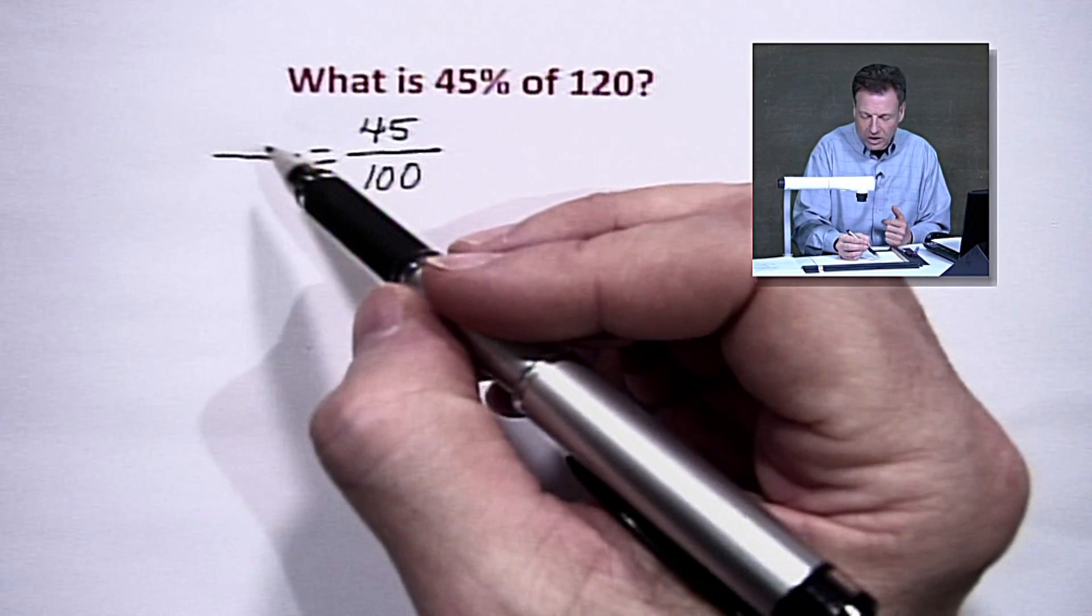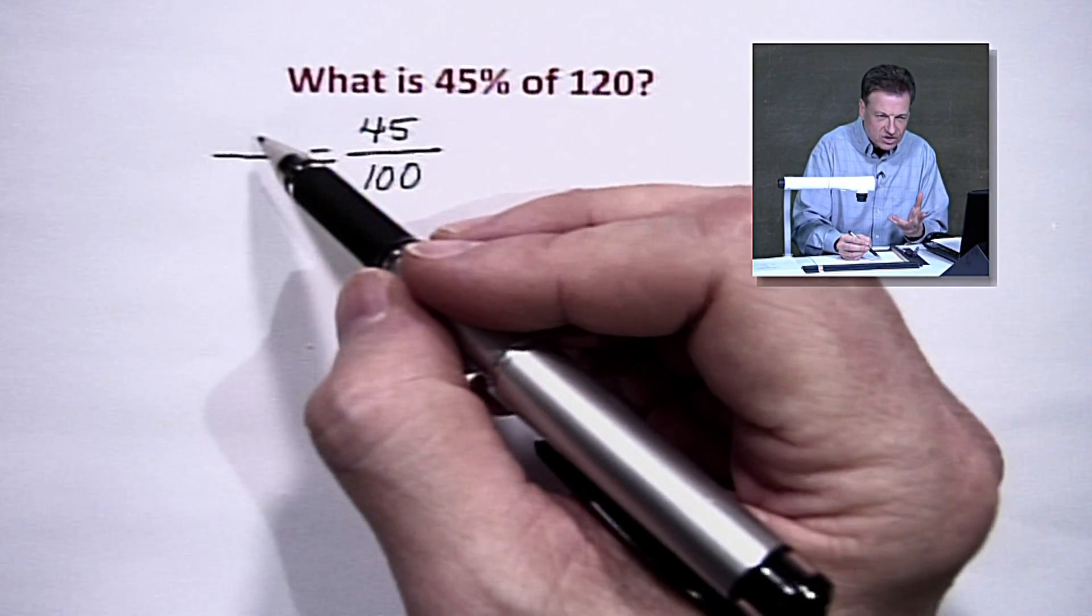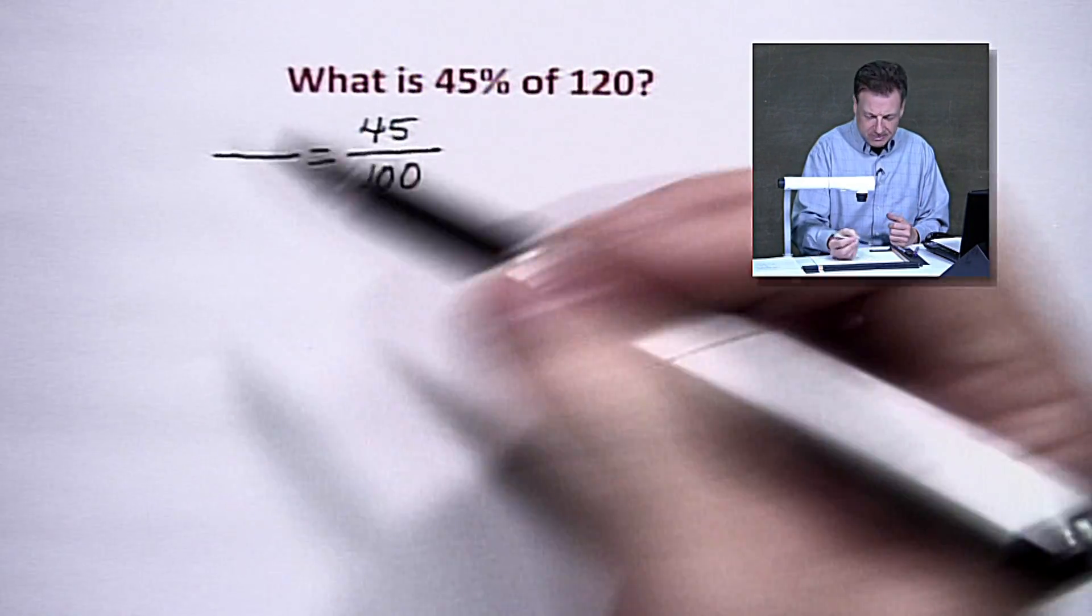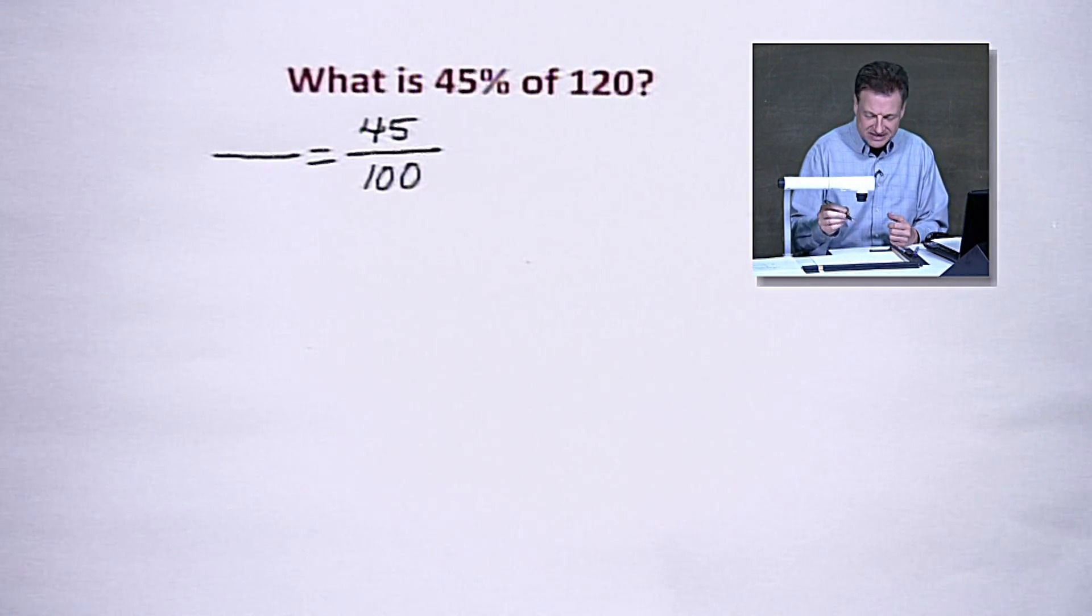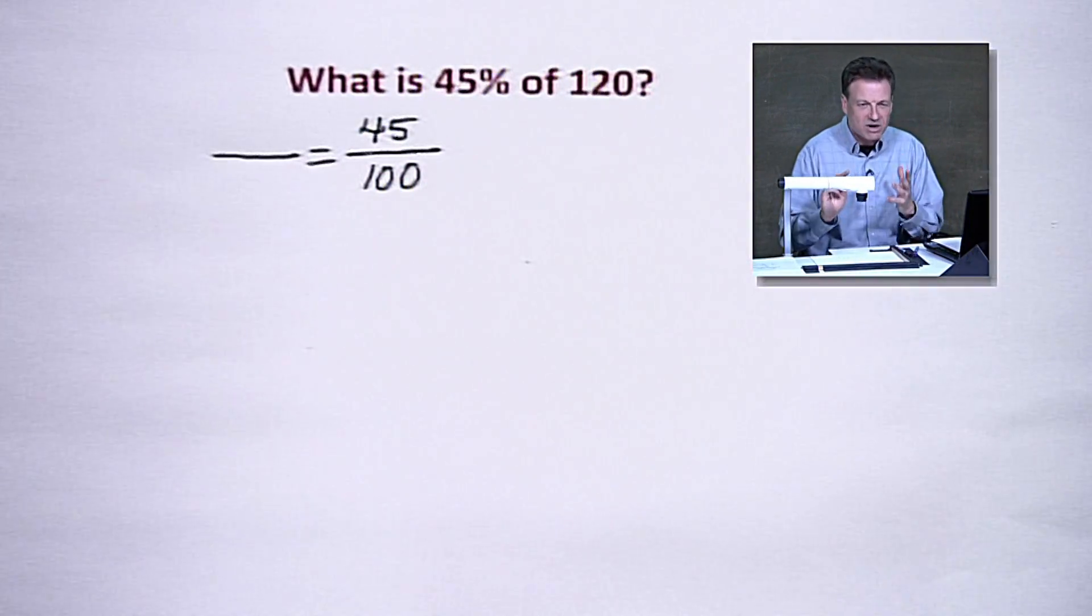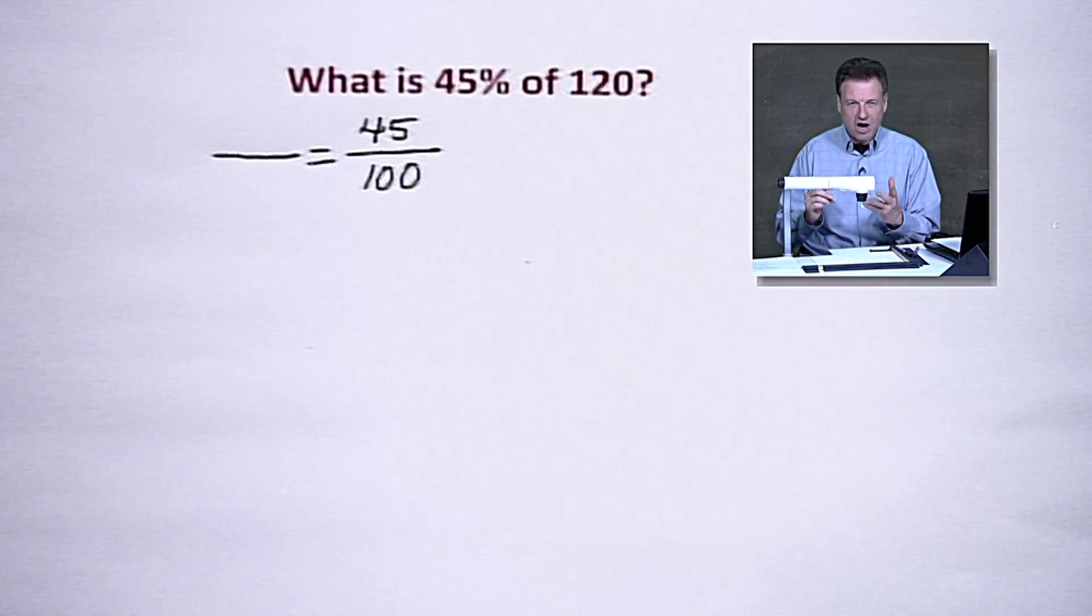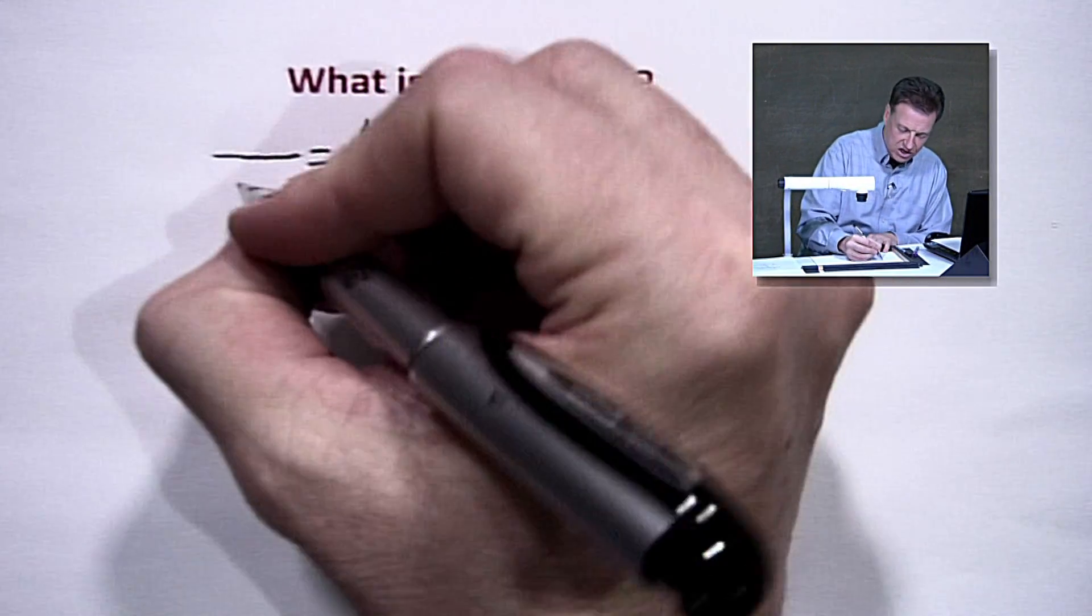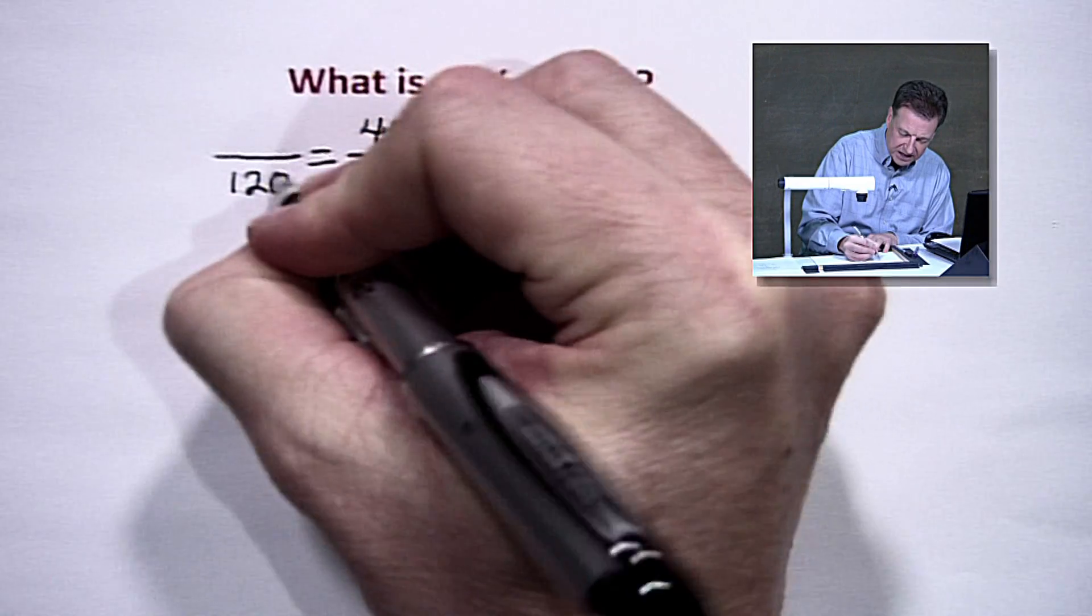Now, on the other side, we would like to go with our part, or what we're basically looking for, what is our outcome, and we're going to divide by the base. You say, Ernie, how do you know what the base is? The base is usually attached to the word of. In other words, where do we start? We start with 120, and we're going to look for 45% of that. So here goes the 120 down here.